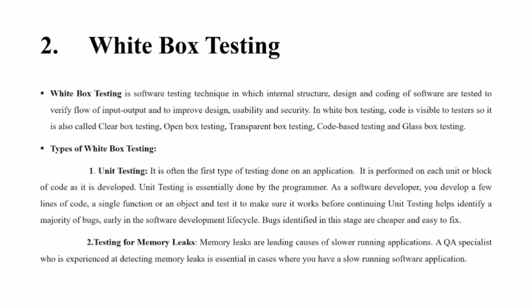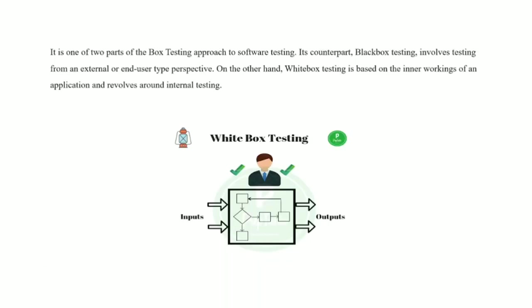The second type is testing for memory leaks. Memory leaks are leading causes of slower running applications. A QA specialist who is experienced at detecting memory leaks is essential in cases where you have a slow running software application. It is one of two parts of the box testing approach to software testing. Its counterpart, black box testing, involves testing from an external or end-user type perspective. On the other hand, white box testing is based on the inner working of an application and revolves around internal testing.